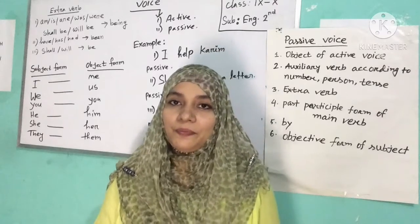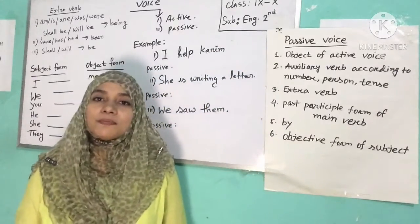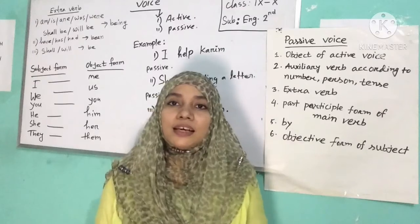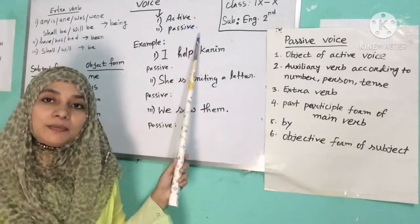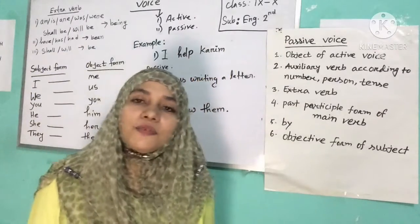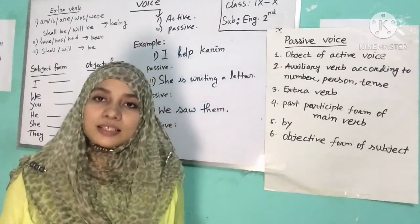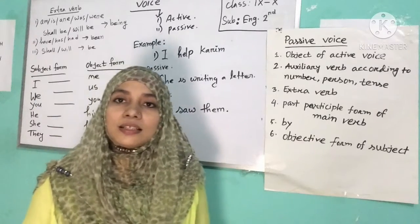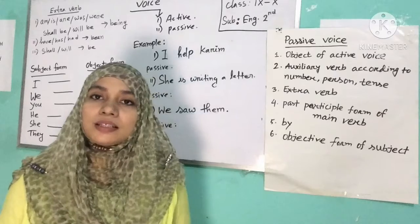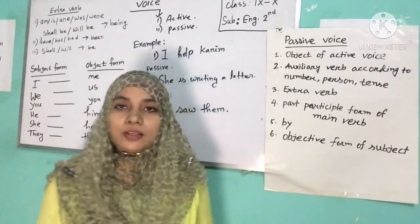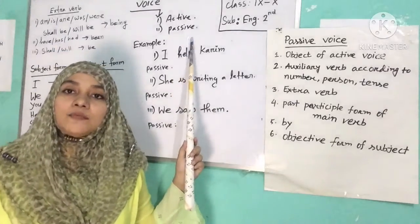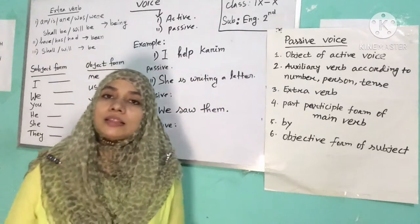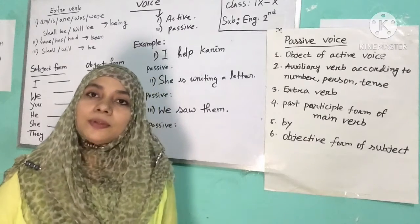Voice is the form of a verb. There are two types of voice: active voice and passive voice. Active voice is when the subject of a sentence is the doer — the verb is in active voice. Passive voice is when the subject of a sentence is acted upon — the verb is in passive voice.